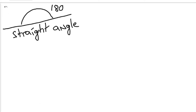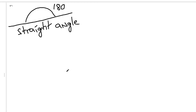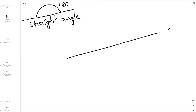So now we know that straight angles are always 180 degrees. But how is that useful? How does that help us? Well, let's consider what happens when we have more than one straight line. Let's draw a straight line there, and let's say that we have another straight line like that. Now we have two straight lines intersecting each other.